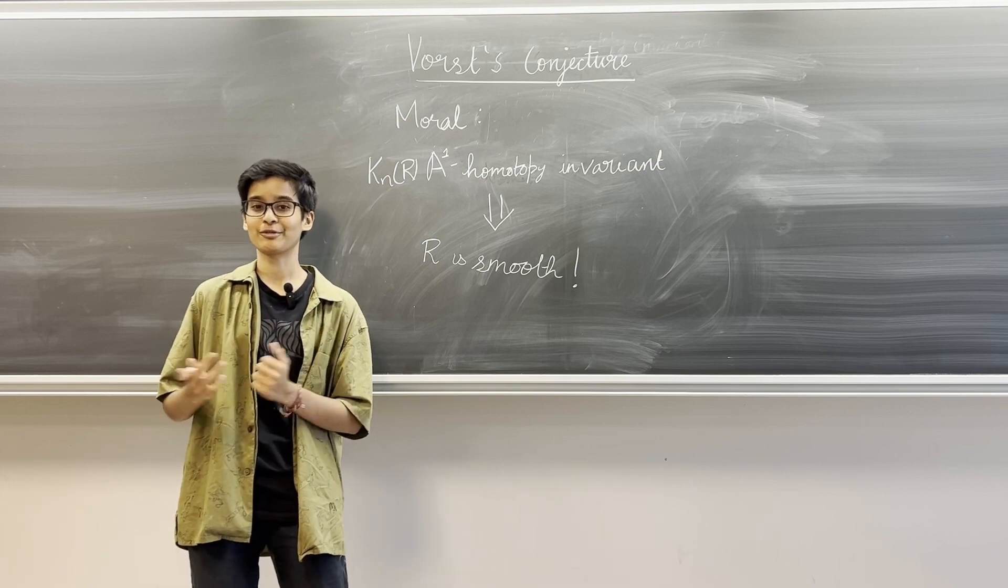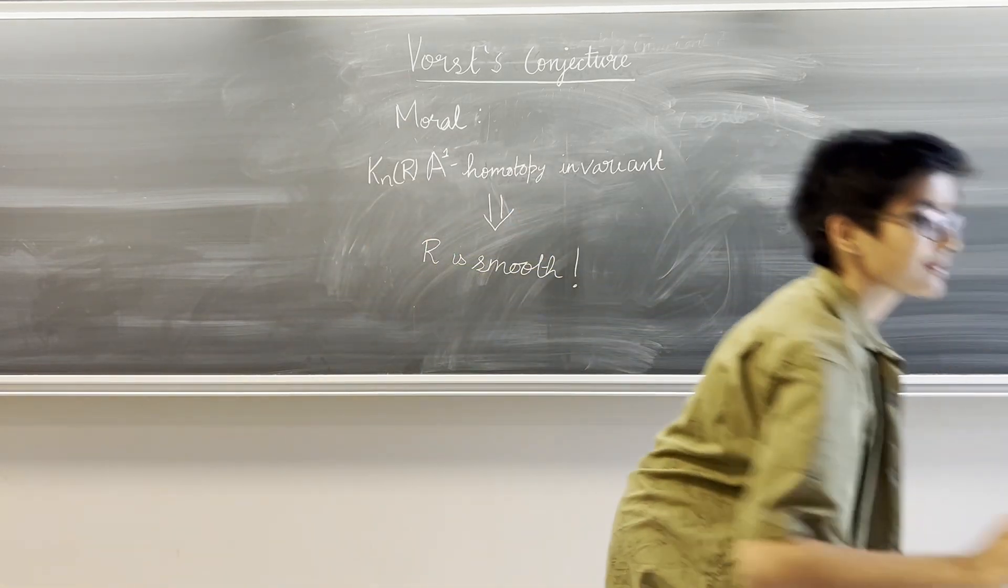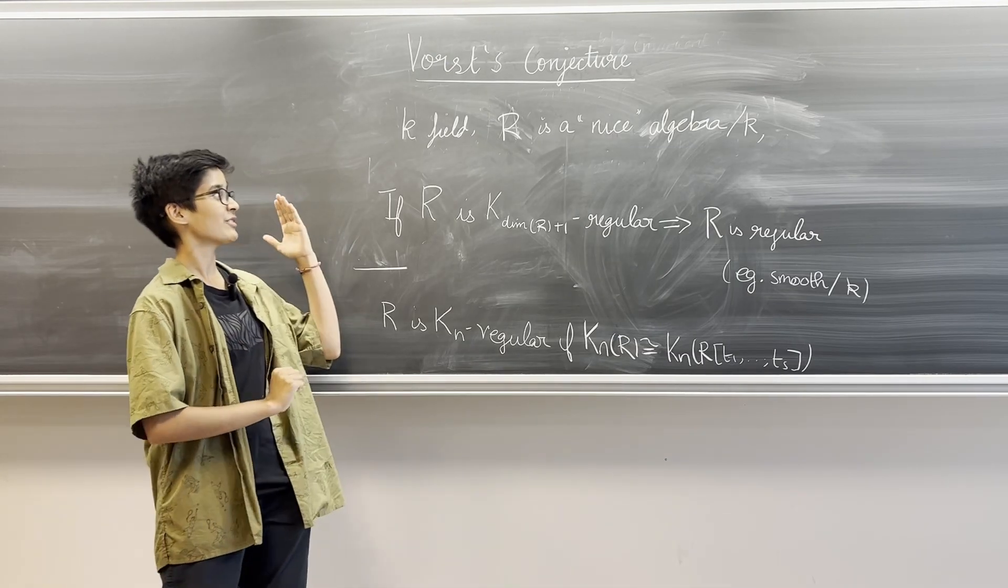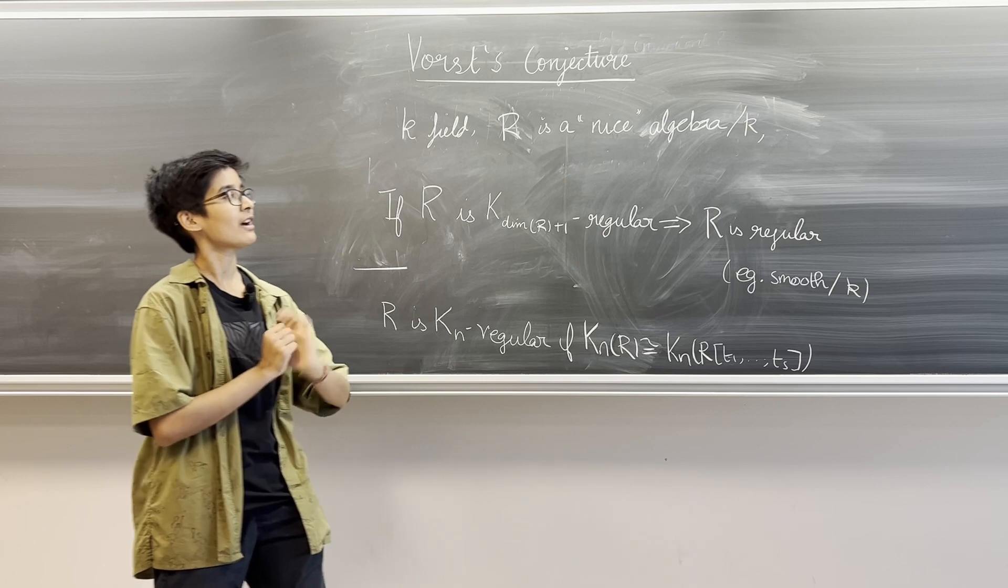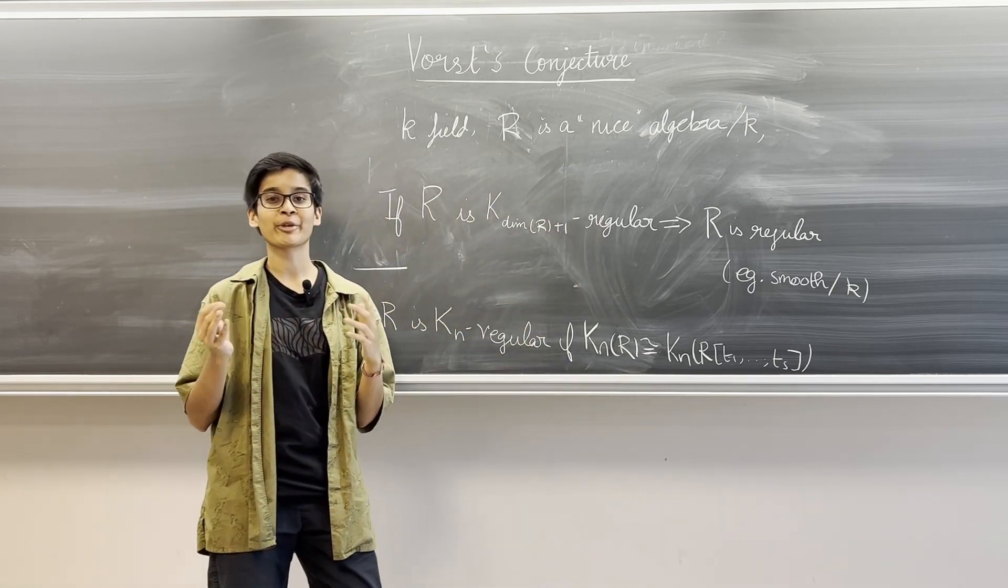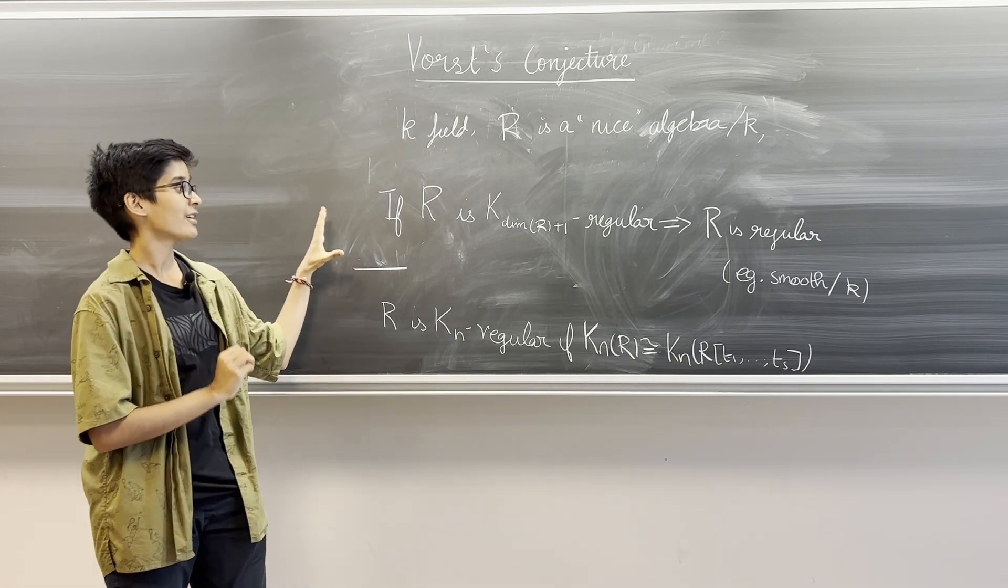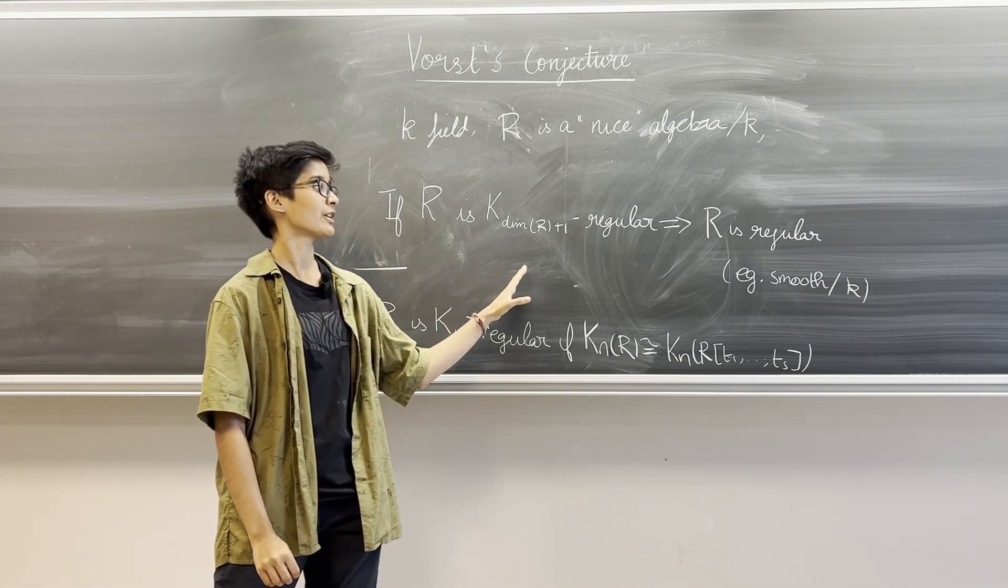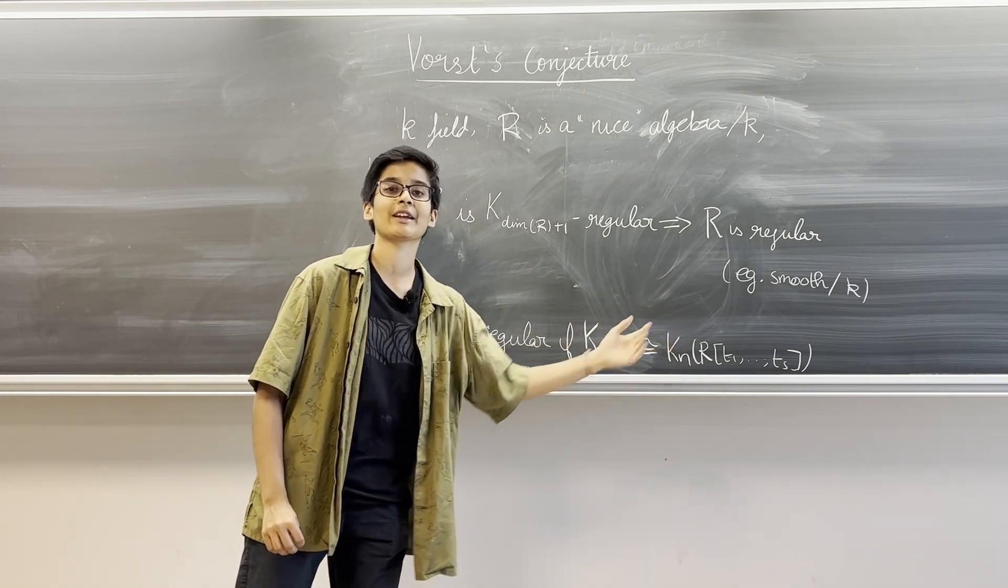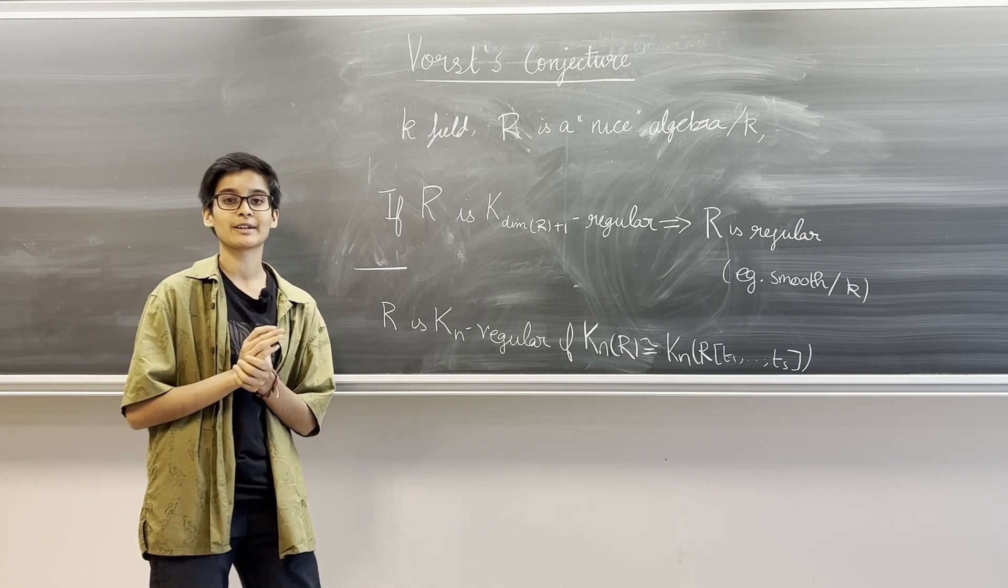Let us go through the statement of Vorst's conjecture. The statement of Vorst's conjecture is as follows. It states that if we have a field K and if we have R which is a nice algebra over a field K, where most algebras over a field K are nice, then we have that if R is K dimension d plus 1 regular, then R is regular, for example it is smooth over a field K.